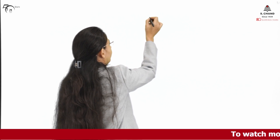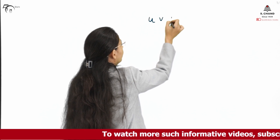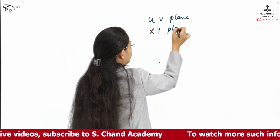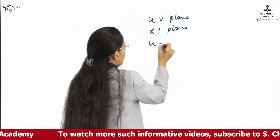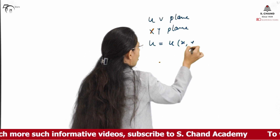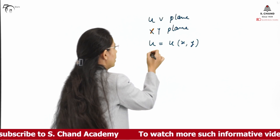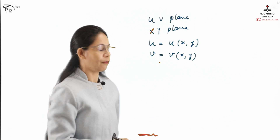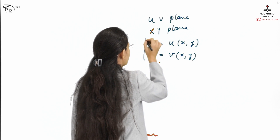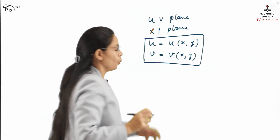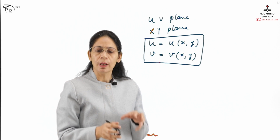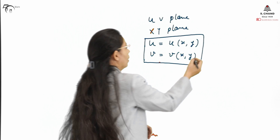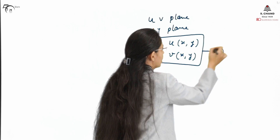Suppose we have a uv plane and we have another xy plane. If u can be transformed to the xy plane by this relation, and v is a function of xy, then this is called the transformation equation, which establishes a relation between the points in the uv plane and the points in the xy plane. Let us call it equation 1.